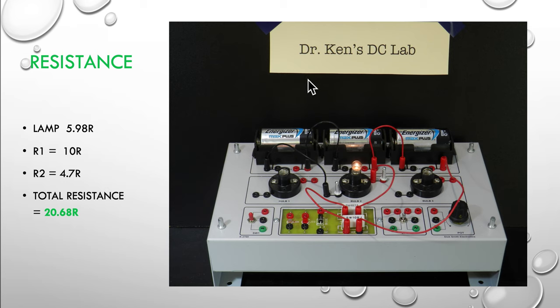First we're going to look at resistance. My lamp is 5.98 ohms of resistance, R1 is 10 ohms, and if you look carefully you can see the 10R here. R2 is 4.7, and again if you look carefully you'll see 4R7 meaning 4.7 ohms, giving me a total of 20.68 ohms total for my circuit.